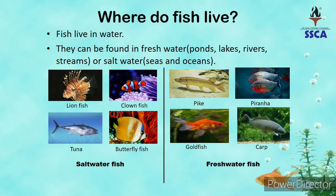Where do fish live? Machliyaan kahaan rehti hain? Fish live in water. Machliyaan paani mein rehti hain. They can be found in fresh water or in salt water. Fresh water — hum basically meethe paani ko kehte hain. Hamara fresh water kahaan-kahaan paaya jaata hai? Ponds, lakes, rivers, and streams mein. Jabke salt water seas aur oceans mein paaya jaata hai.